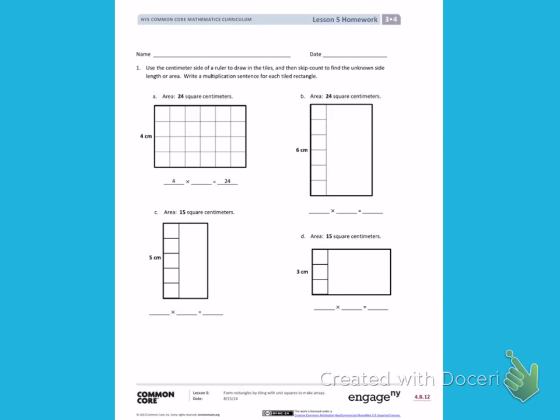Number 1. Use the centimeter side of a ruler to draw in the tiles and then skip count to find the unknown side length or area. Write a multiplication sentence for each tiled rectangle.